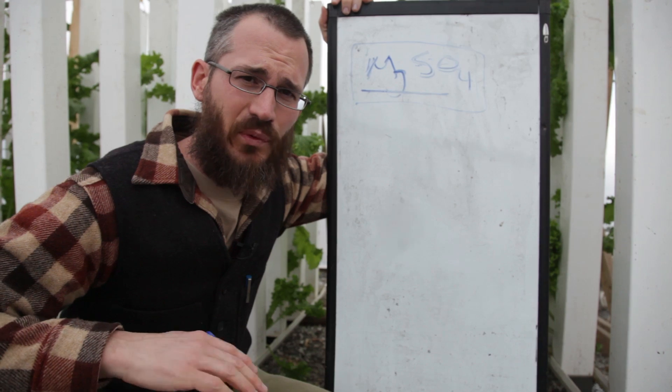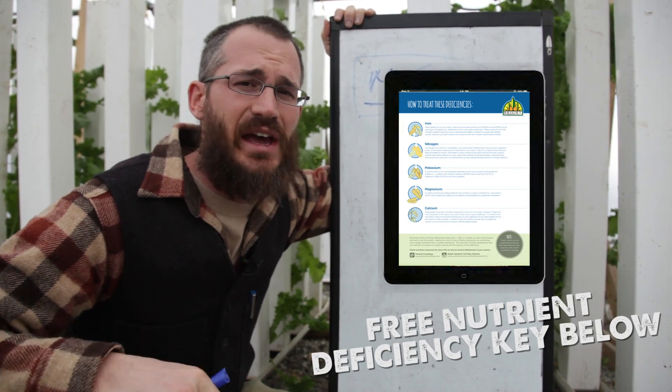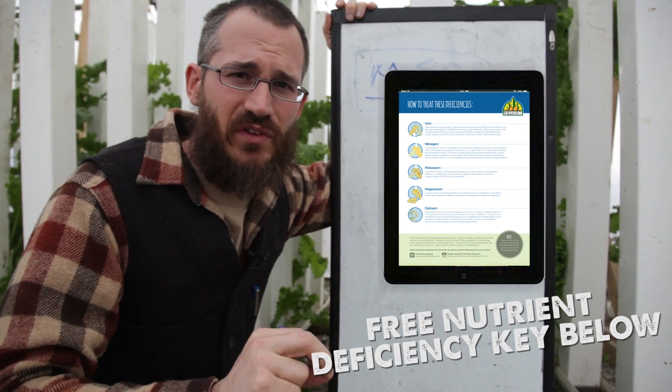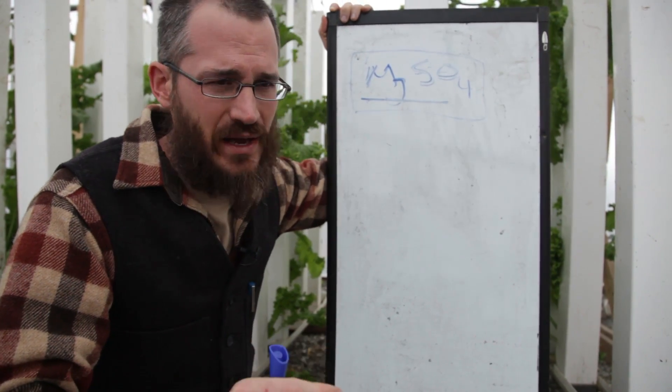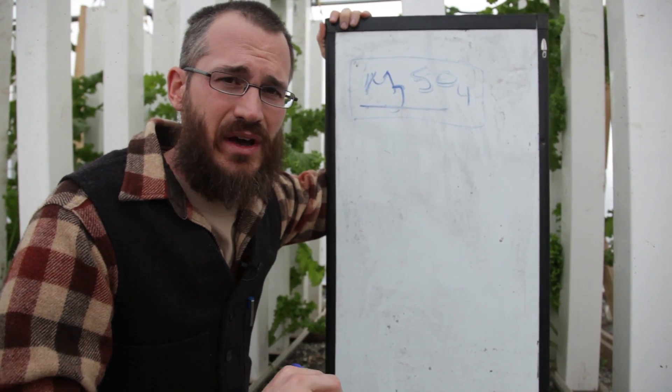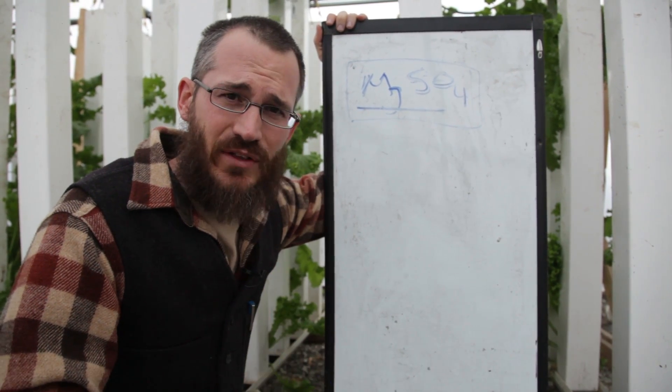So that's it, short and sweet as far as magnesium is concerned. Again, make sure you get the deficiency key and use it to diagnose so that you're being sure that what you're seeing is potassium or magnesium or calcium. Remember, they can look very similar depending on the crop and depending on how they're manifesting. So make sure you download that key.